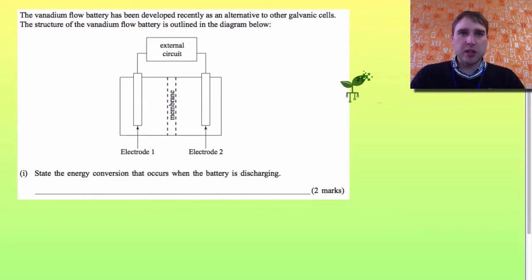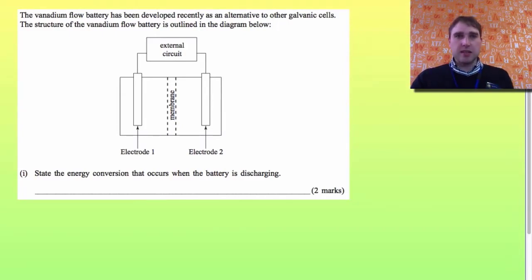Here's the start of the question. A vanadium flow battery has been developed. We have a picture of the battery and we're told to state the energy conversion that occurs when the battery is discharging. What that means is when we're giving off energy because it's a battery.